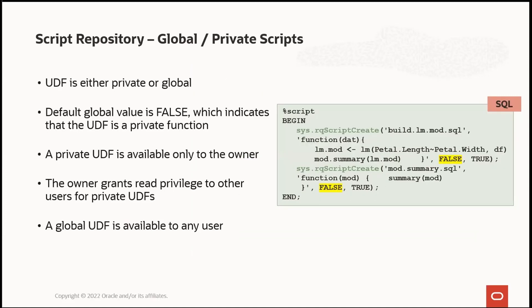A UDF is either private or global, and private is the default, so you need to specify otherwise. In SQL, you can define two different UDFs in a single script with a false parameter for global — meaning it's private. If you declare true, it would be available globally to any user. Because it's false, you need to perform a simple grant read privileges to share access.